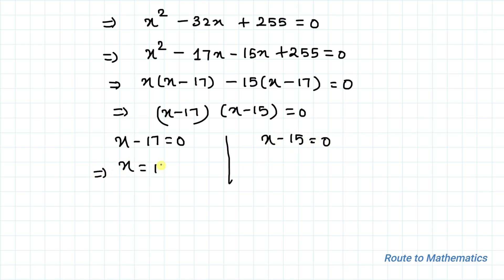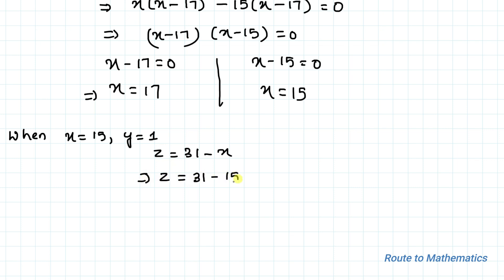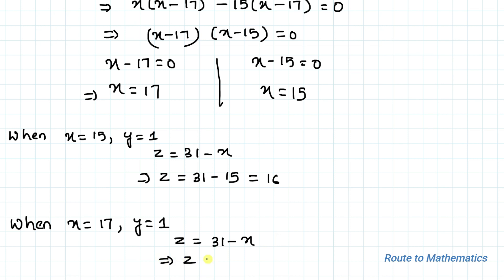From the factored equation we get x = 17 or x = 15. Now let's find z by substituting into equation 3. When x = 15 and y = 1: z = 31 - 15 = 16. When x = 17 and y = 1: z = 31 - 17 = 14.